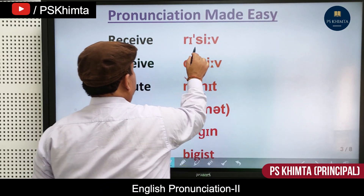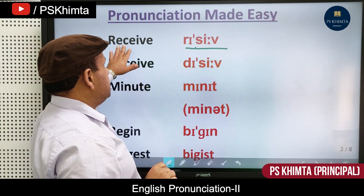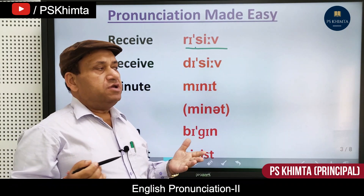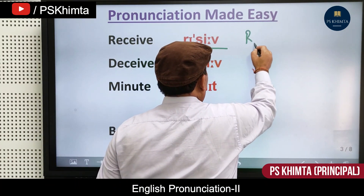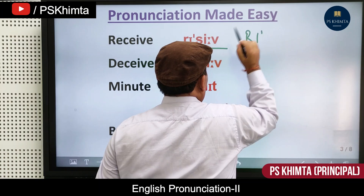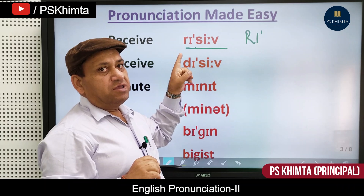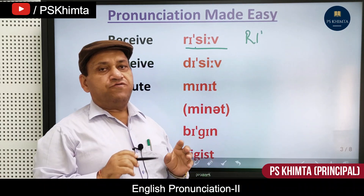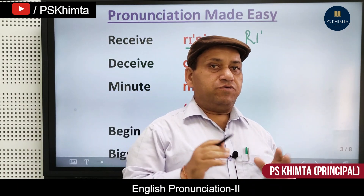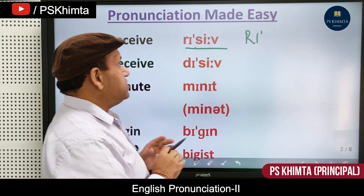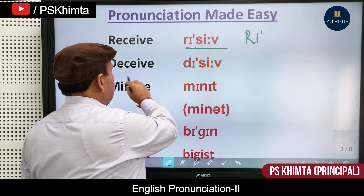The first word is 'receive.' The correct pronunciation is 'receive' — first 're,' then 'ceive': receive. For example: 'I received a parcel yesterday.' Never say 'recieve' — the correct form is 'receive.'